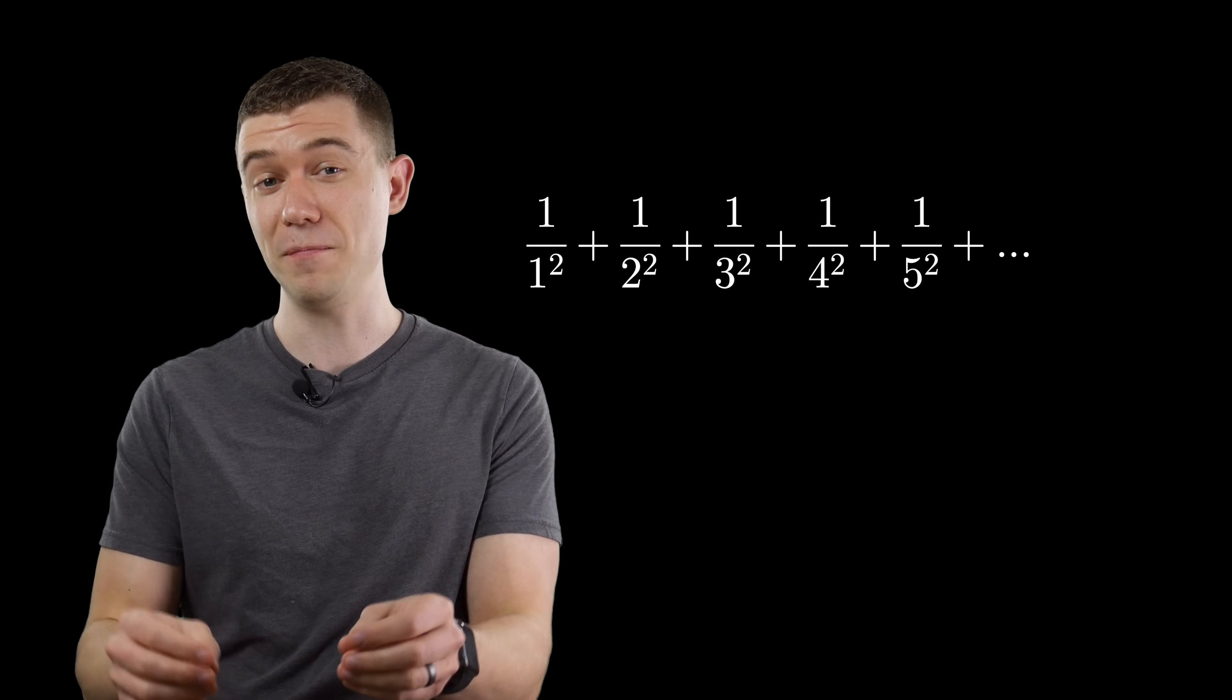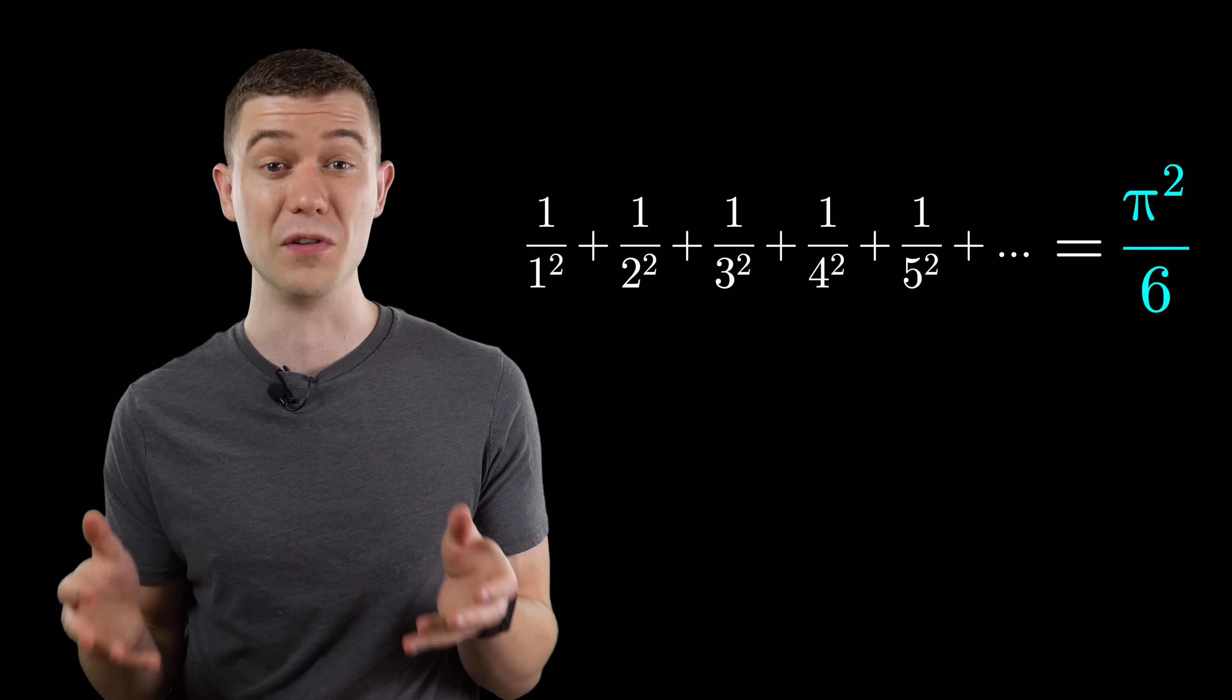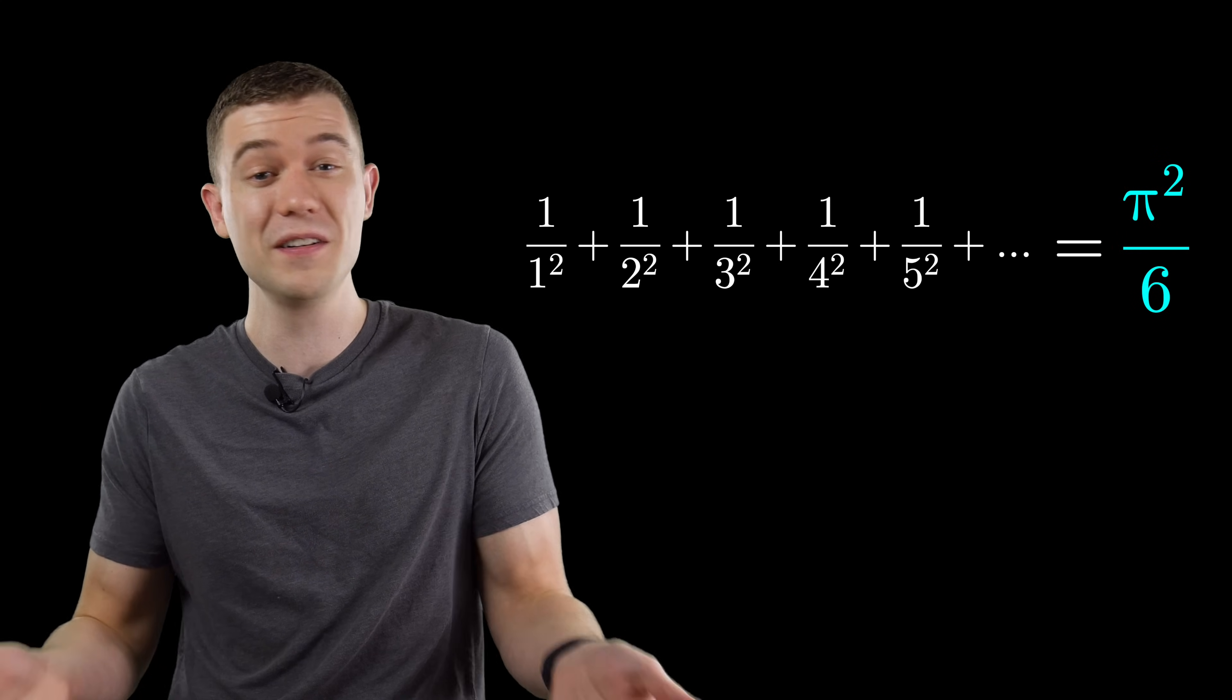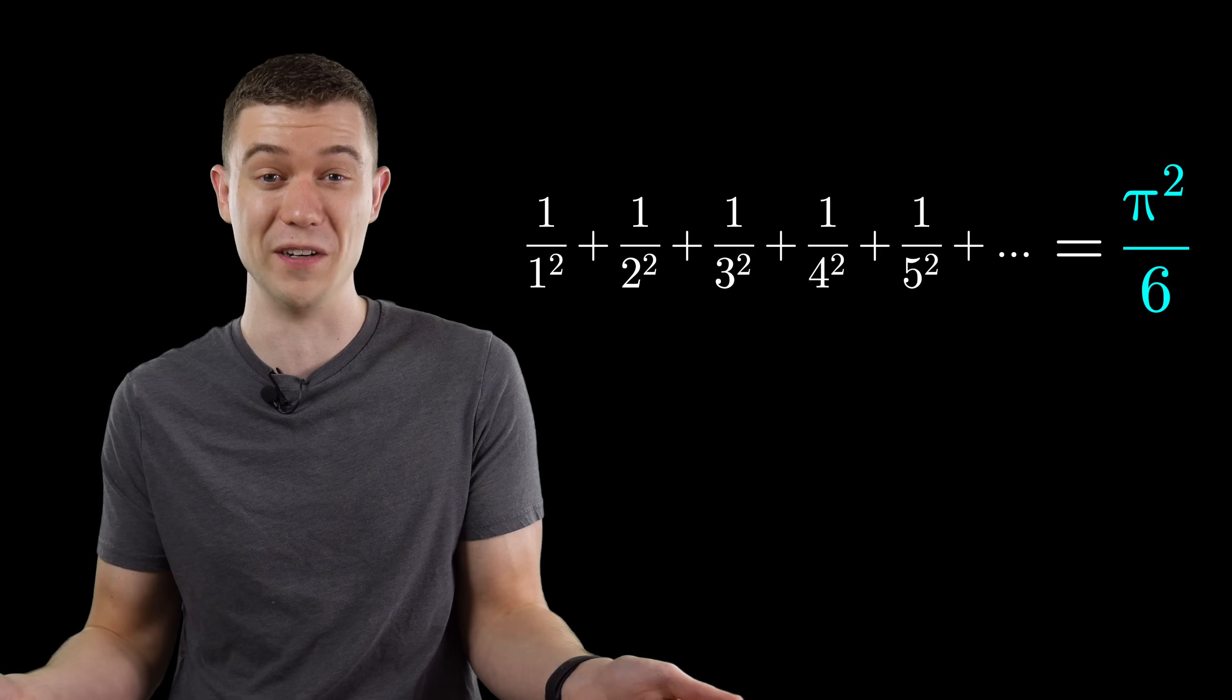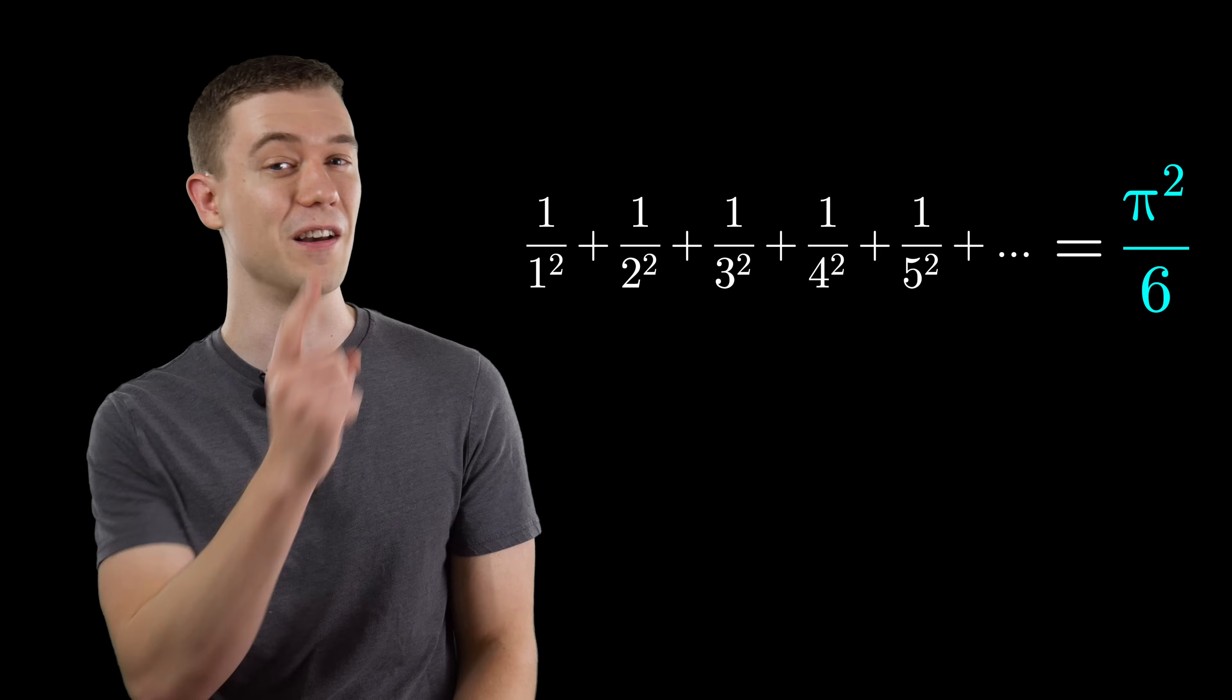I made a dedicated video about this one already, but I just like it too much to not include it in this list. The sum of reciprocal squares is, of course, pi squared over 6. Leave it to Euler to do this back in the 1700s and become famous for doing it. If you want to see the proof of this, you can click right here.